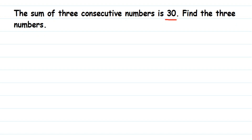Since we don't know any number, we're going to assume the first number to be x. So suppose the first number is x. The second number will be the next number — we have to add one to it. For example, suppose I have the number 2, the next number is 3, so from 2 to 3 I add one.